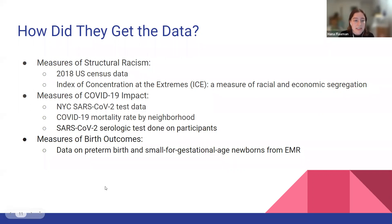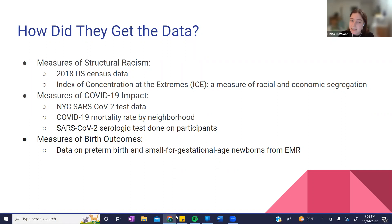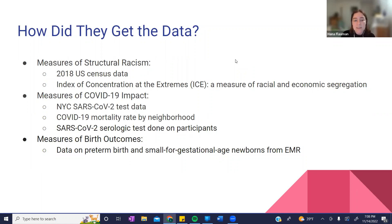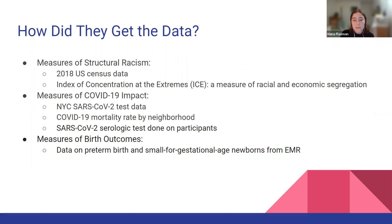They also looked at something called the Index of Concentration at the Extremes — a measure of neighborhood-level racial and economic segregation, particularly looking at an extreme form of segregation called spatial polarization. As for the measures of COVID impact, they looked at SARS-CoV-2 data from New York, COVID-19 mortality by neighborhood, and also did COVID testing on their participants. For the birth outcomes, they got that from the electronic medical record and looked at patients' preterm birth and small for gestational age outcomes.